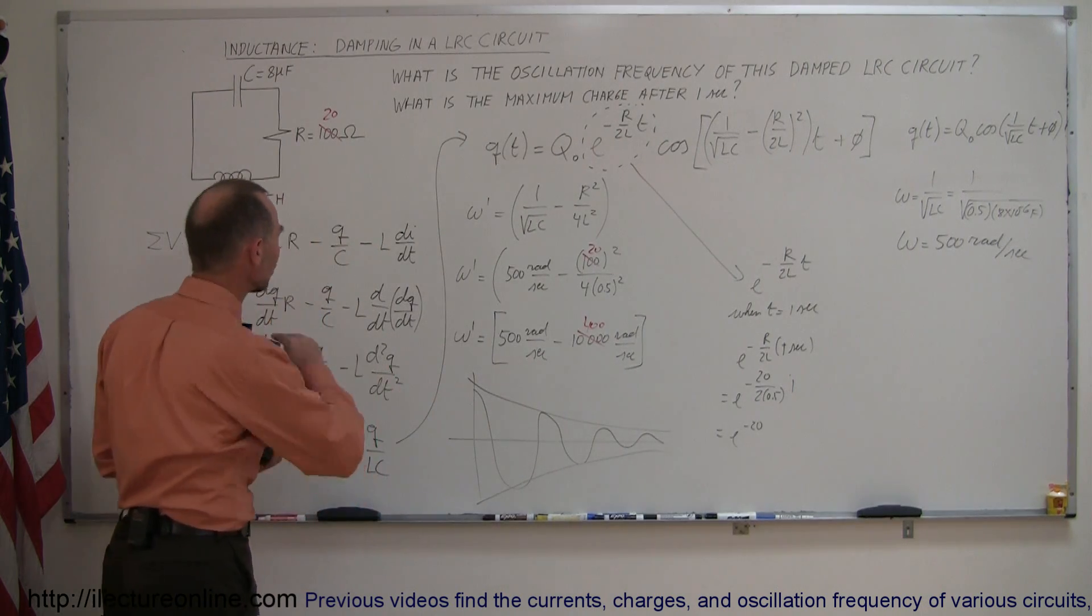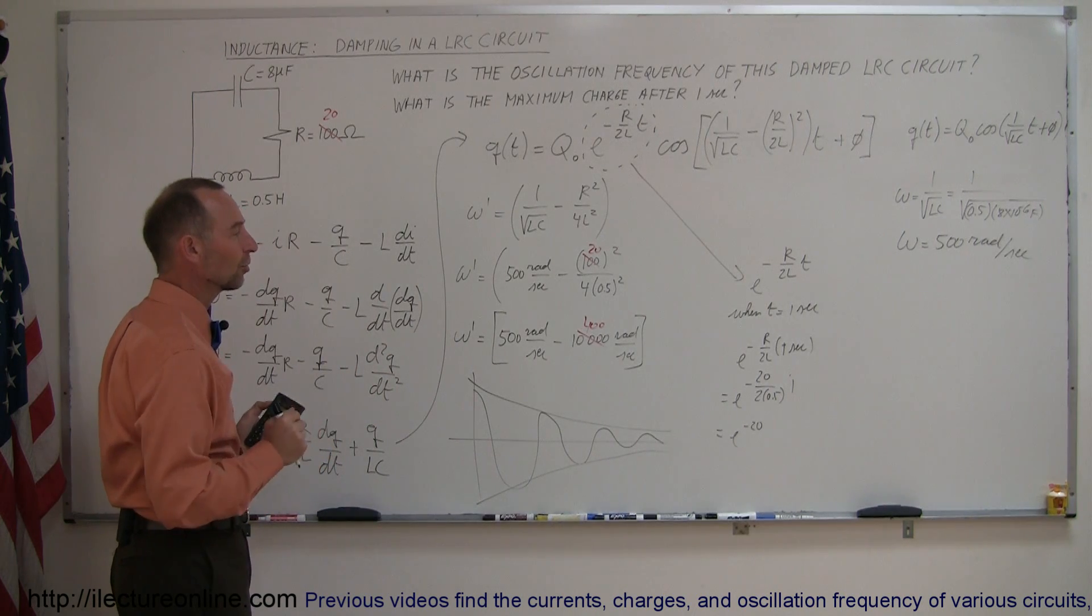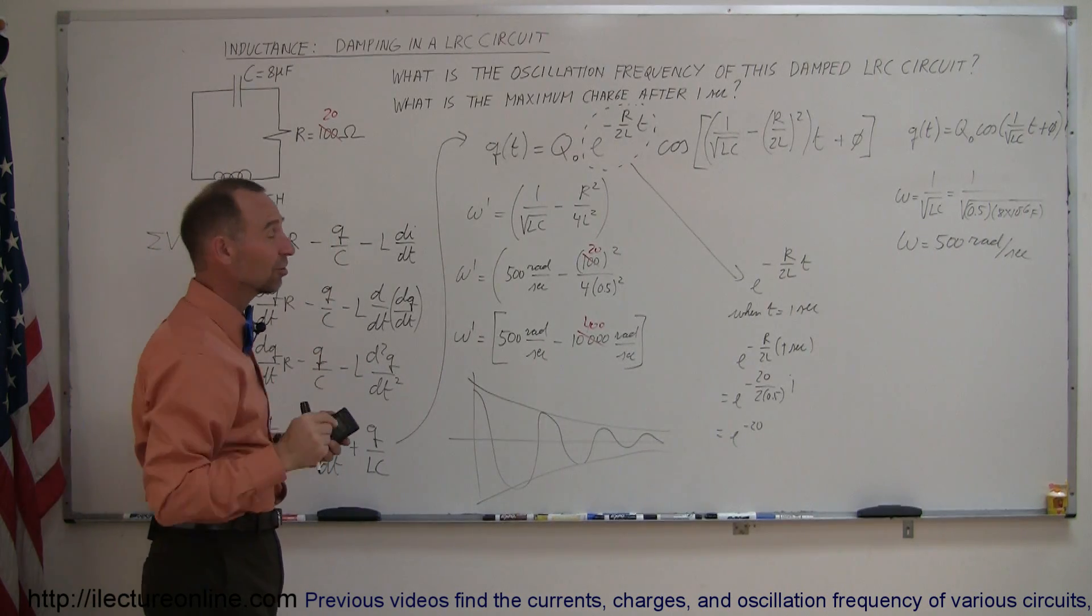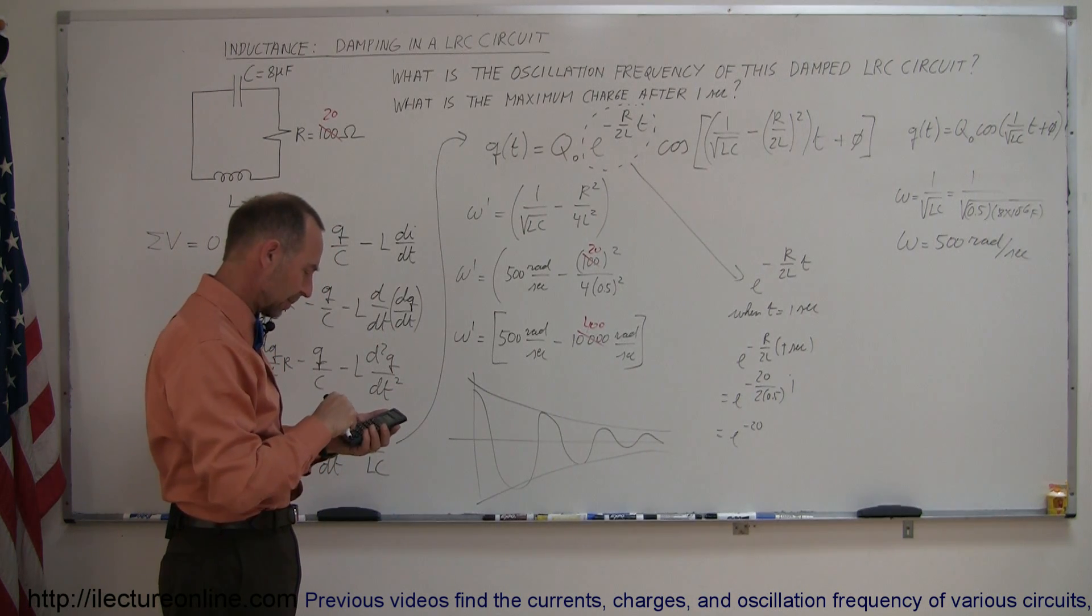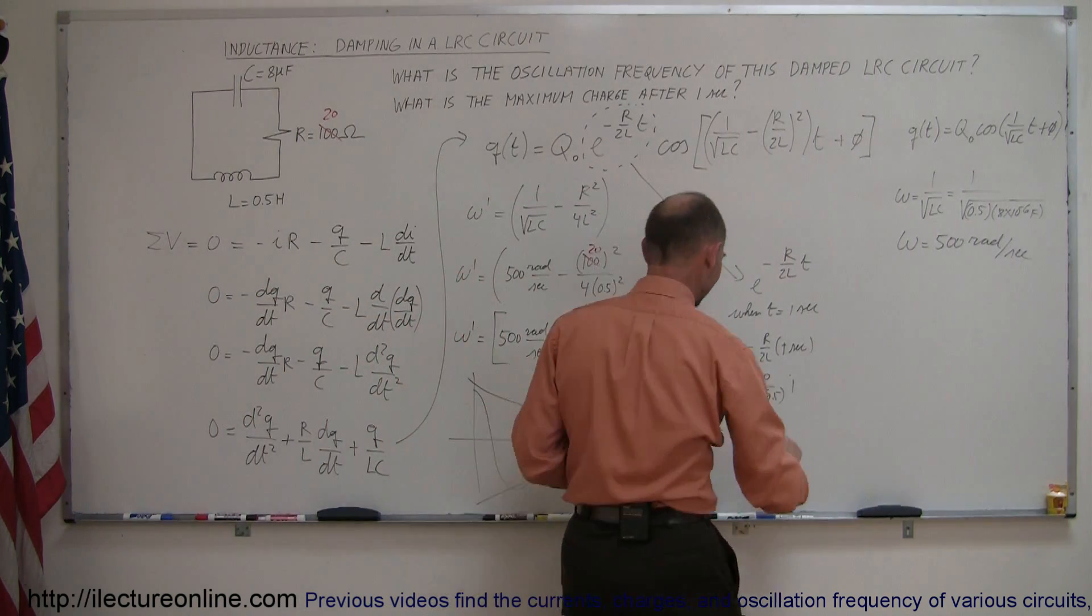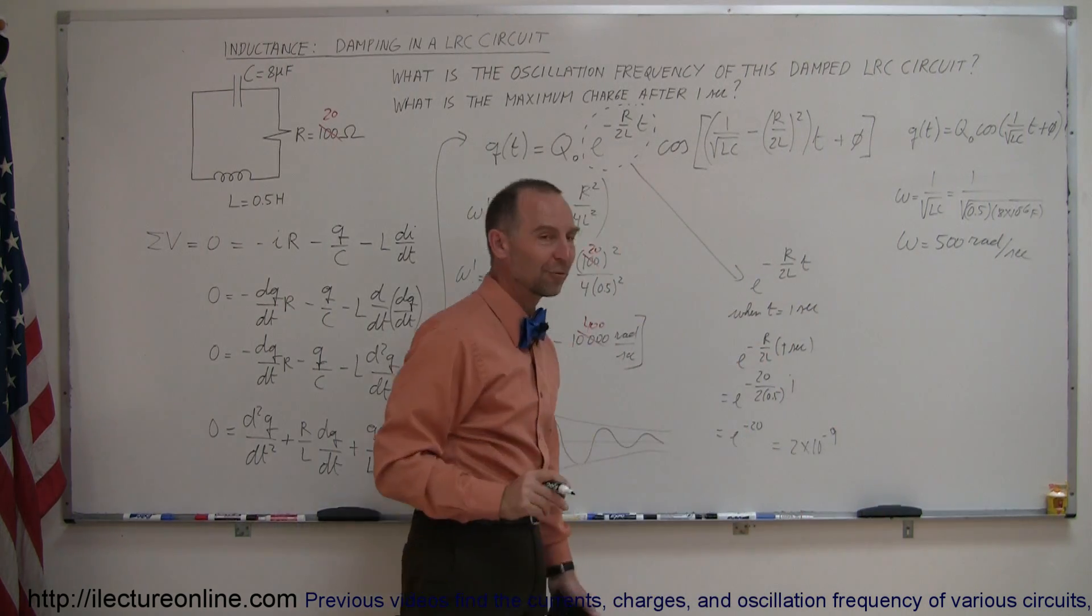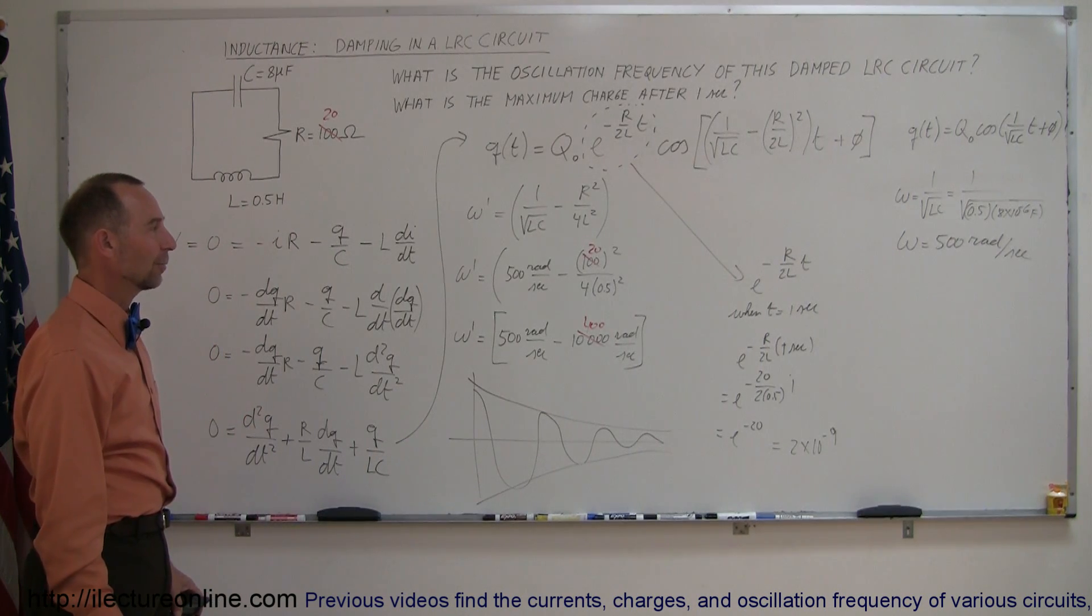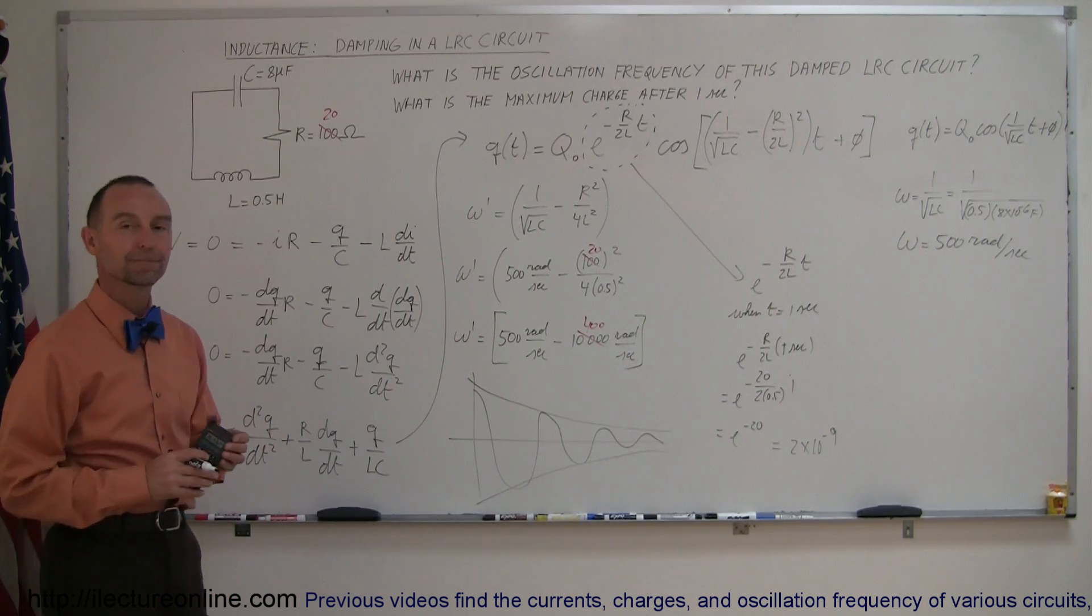So only for very small resistors would the oscillation keep going for any length of time. Once the resistor gets big enough, it stops it almost instantly. So a resistor, anything bigger than a few ohms, will stop the oscillation rather quickly. So e^-20, let's do it real quick. It's a very small number. Oh, it's 2 times 10^-9 nanoseconds. So this is equal to 2 times 10^-9. So you can see that in a matter of a few nanoseconds, the oscillation would stop. So it's a rather small period of time before the oscillation would come to a complete stop. And that's how you do it.